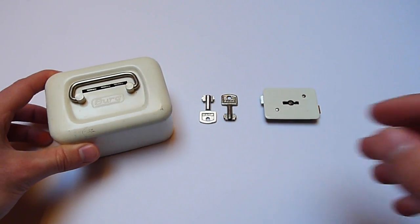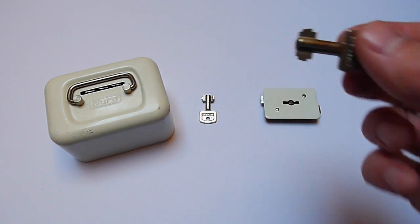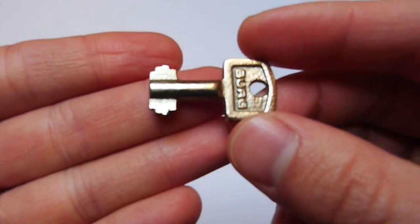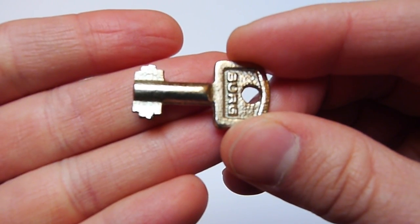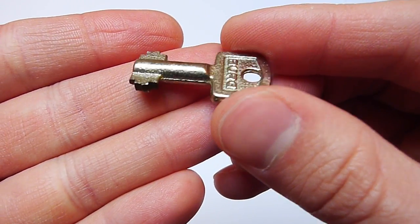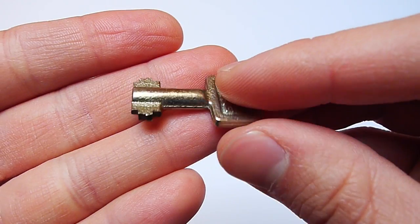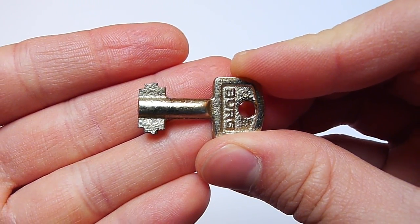Let's take a look at the special thing about that money bank or coin box. It's the key, because as you can see here it's a double-bitted key and it has four bittings on each side. I've never seen a money bank or coin box with a double-bitted key before, so this is quite unique if you ask me.